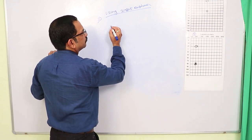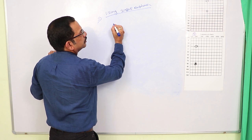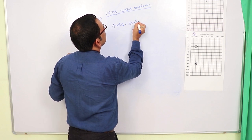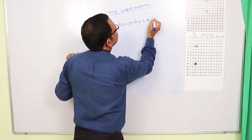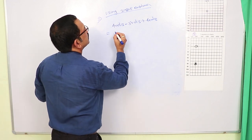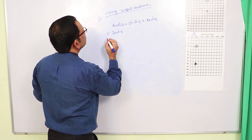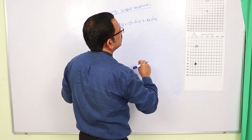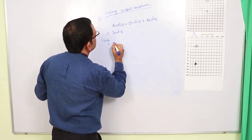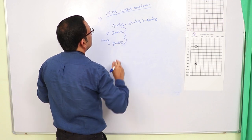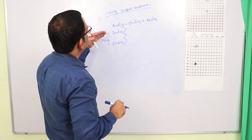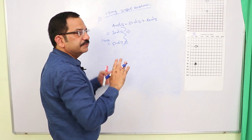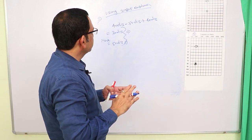Using insert earphones, the minimum masking level will be 40 dB (threshold in the test ear) minus 50 dB plus AB gap in the non-test ear that is 40 dB. So the minimum level of masking is 30 dB, and the maximum level of masking is BC threshold in the test ear (0 dB) plus 50 dB, that comes out to be 50 dB. While using insert earphones, the minimum level of masking is 30 dB and the maximum level is 50 dB, so there is a possibility of obtaining a plateau.